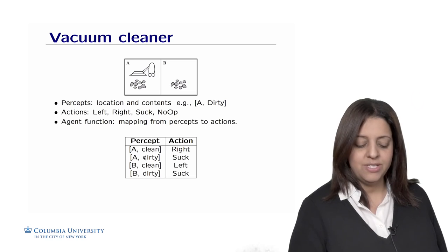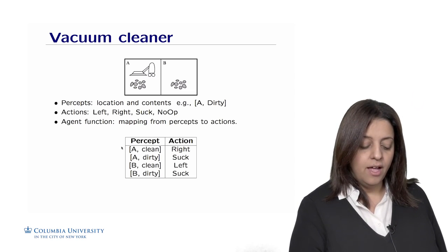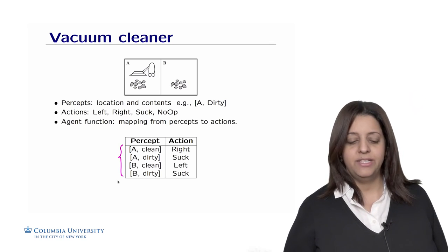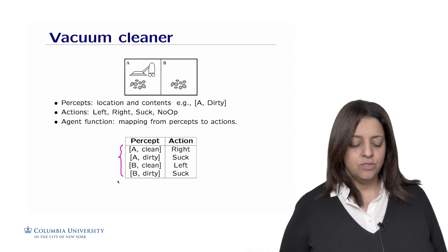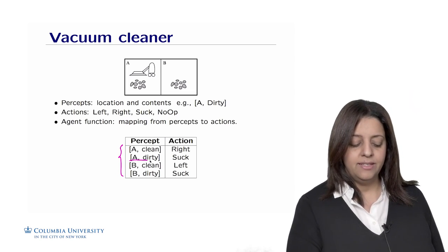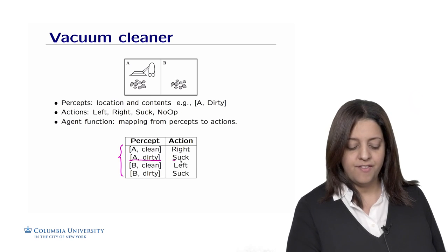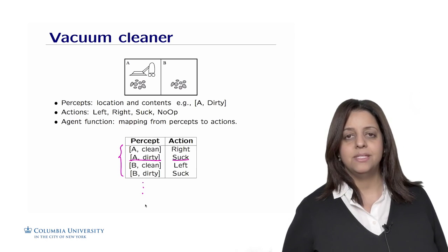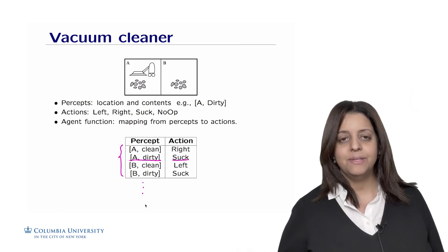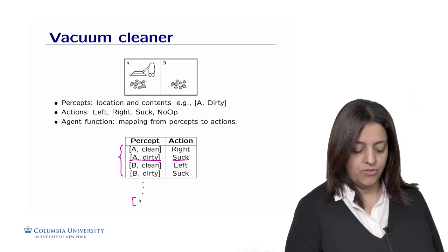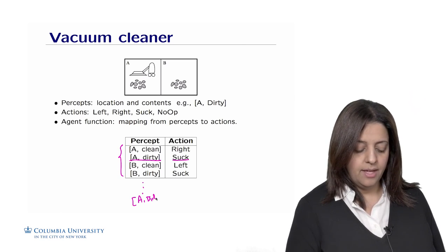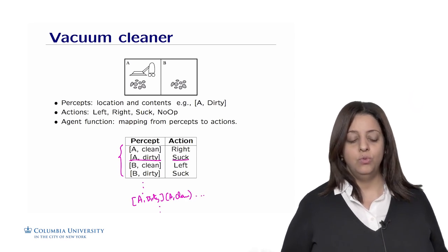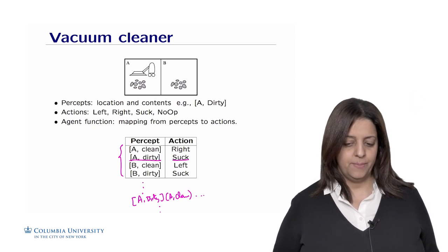This is a simple percept-action table with simple percepts on the left and the corresponding actions. Given this, the agent will just need to look up in this table, and depending on what it is perceiving from the environment through its sensors, it will define what to do. We could actually make this table longer by not only keeping single percepts by themselves, but having combinations of percepts or sequences of percepts. For example, if A was dirty and then became clean, what to do? So we're going to extend this table to maintain not only the percepts, but also sequences of percepts.